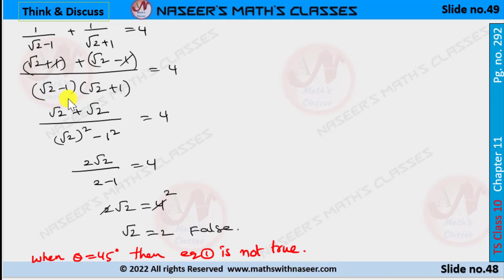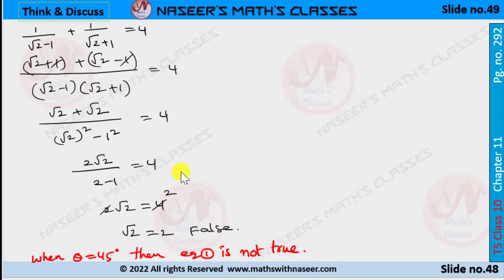Taking LCM as (√2 − 1)(√2 + 1), the numerator is written as (√2 + 1) + (√2 − 1). The +1 and −1 cancel, so the numerator becomes √2 + √2 = 2√2. The denominator is in the form (a − b)(a + b) = a² − b², which gives (√2)² − 1² = 2 − 1 = 1. Therefore 2√2/1 = 4, so 2√2 = 4.